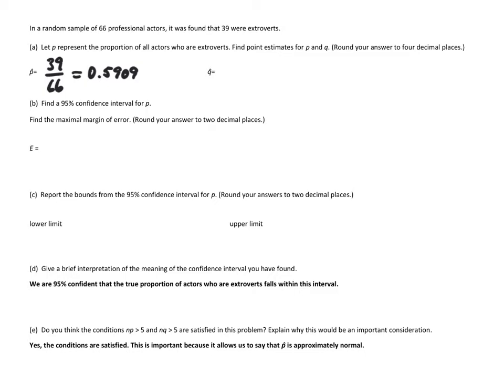Q hat is the proportion of fail, which in this case would be not extroverts. That is one minus P hat. So we can do one minus 0.5909. One minus 0.5909 is 0.4091.